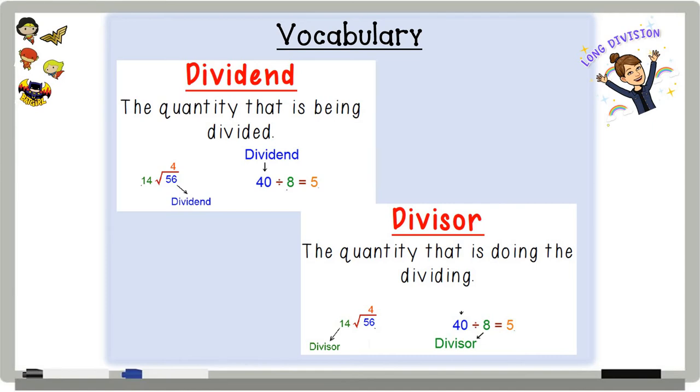The dividend is the quantity being divided, while the divisor is the quantity doing the dividing. That 'er' at the end should be your reminder, should be your key, that it is doing the dividing. Look at it this way. A runner runs. A baker bakes. A teacher teaches. That 'er' at the end is your doing, it's your verb. So the divisor is doing the dividing.